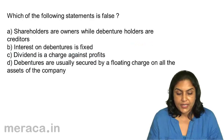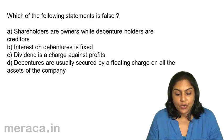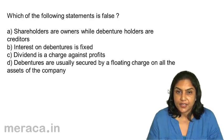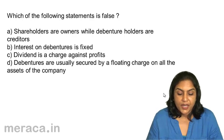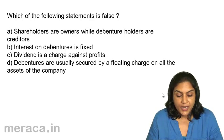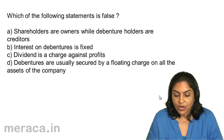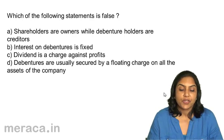Next. Which of the following statements is false? A. Shareholders are owners while debenture holders are creditors. B. Interest on debentures is fixed. C. Dividend is a charge against profits. D. Debentures are usually secured by a floating charge on all the assets of the company.